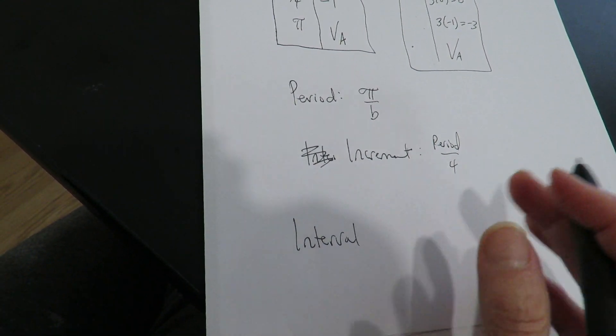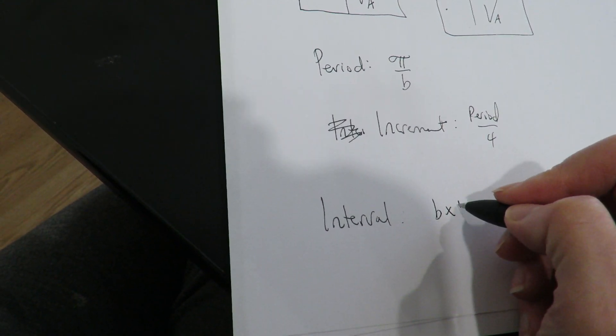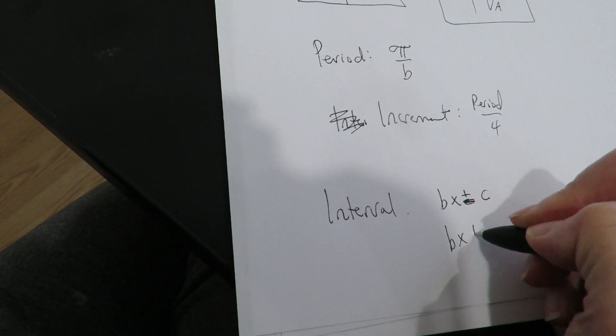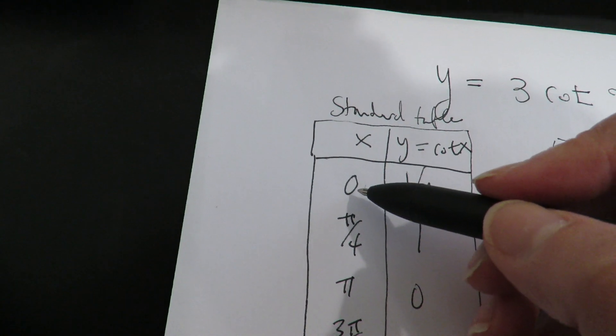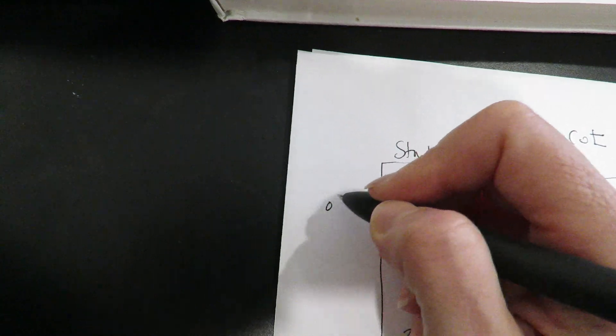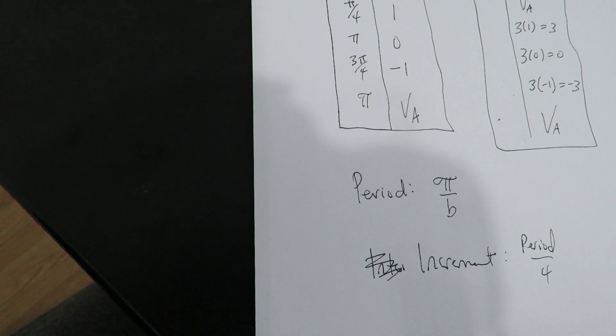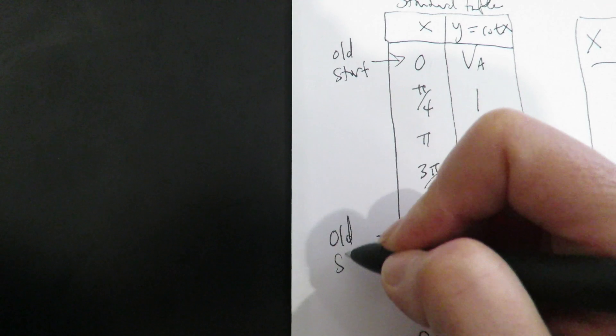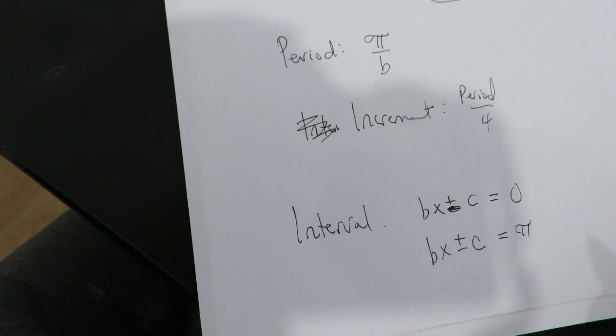But the interval will be different for the cotangent. It's different than the tangent and the sine and the cosine. So you're going to take what's inside the trig function and you're going to set it equal to the old start which would be here - this was the old or original start - and you're going to re-index it, you're going to solve for x. And the old stop was pi and you're going to re-index that.